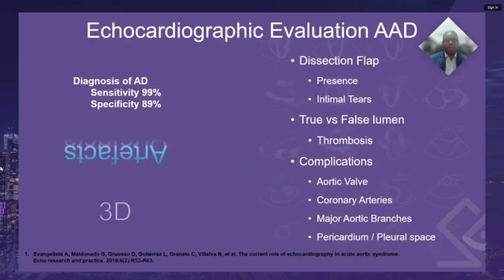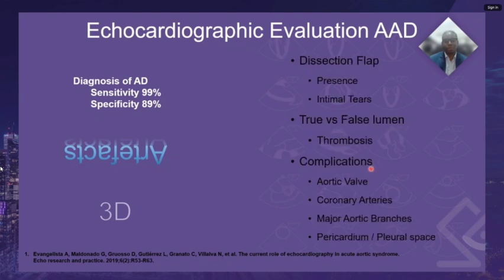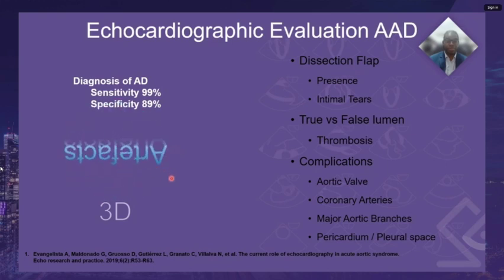Our echocardiographic evaluation of acute aortic dissections will include assessment of the dissection flap, the true versus false lumen, and complications associated with acute aortic dissection. We will also be looking at artifacts — the important ones we need to differentiate from a true aortic dissection — and briefly at the role of 3D echocardiography in this disease.